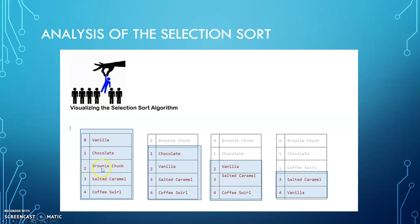In this case, it's going to be the brownie chunk. And what it's going to do is when it finds that low value, assuming it's lower than the starting value, which it is in this case, it's going to replace that in the first position, and then it moves whatever was in the first position to wherever that one was. So vanilla goes to where the brownie chunk was.